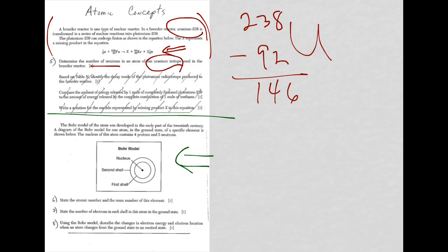For question six, state the atomic number and the mass number for this element in this question. Again, you need to know definitions. Atomic number is the number of protons only. Your atomic number here, given above the diagram, is 4.